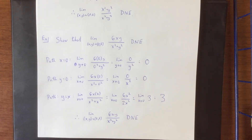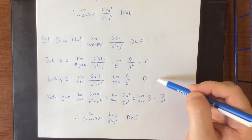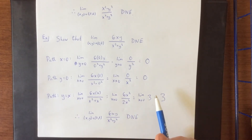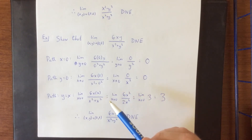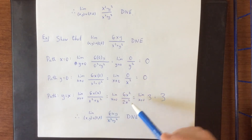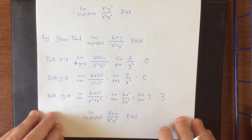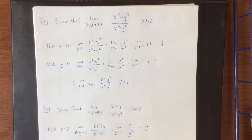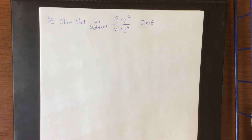The key to success on that problem was that we kept getting 0 from the first paths, so we needed to get something that was not 0. The key to getting a nonzero result from a polynomial divided by a polynomial is to make sure the numerator and denominator have the same degree — then we can cancel the power and be left with the leading coefficients. That is the motivation for our next example: show that the limit as (x, y) approaches (0, 0) of 2xy squared over x squared plus y to the fourth does not exist.